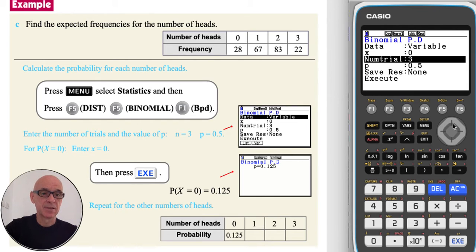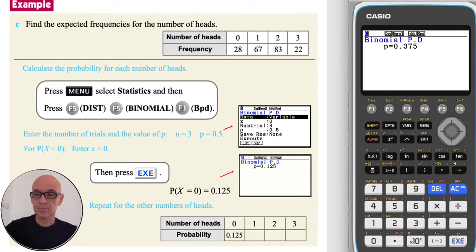Repeating this for the other categories. So pressing exit, scrolling up and setting X equal to 1. Press and execute.